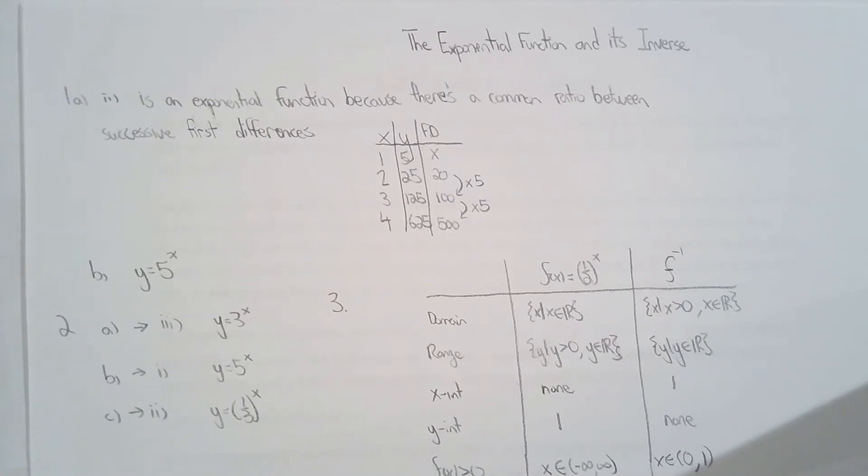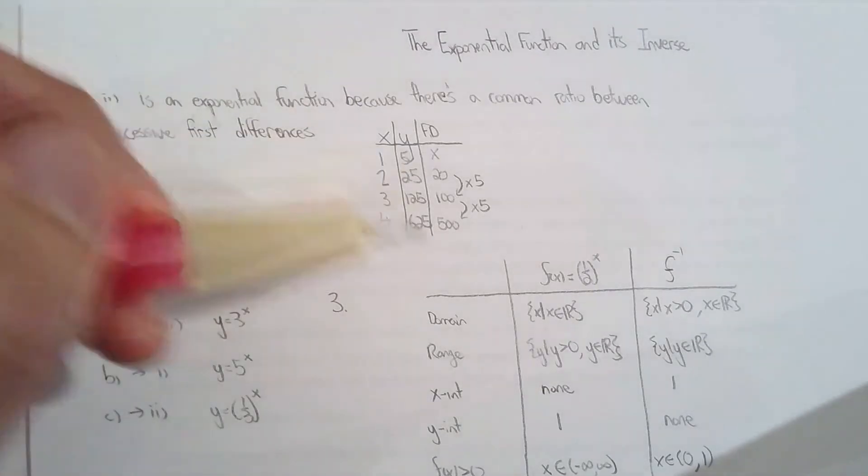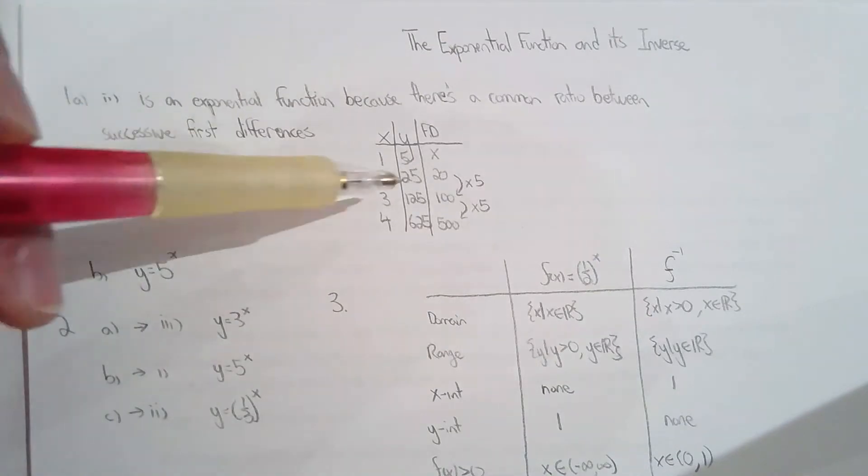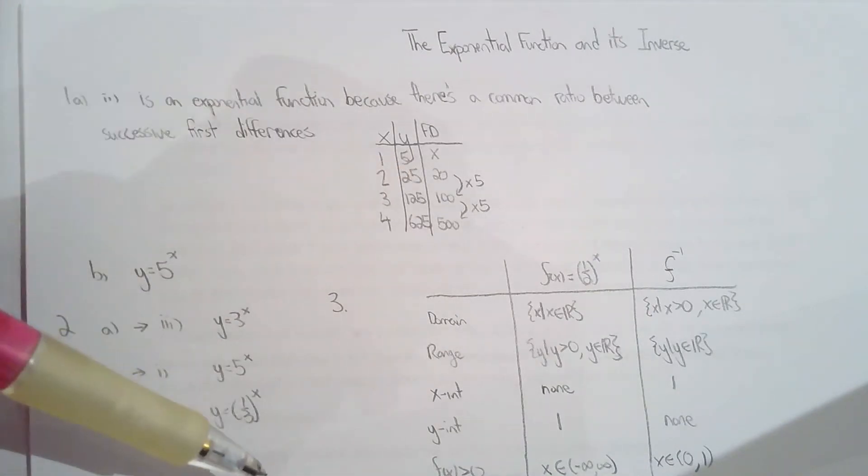The first table is not an exponential function because if you find the first differences and check if there's a common ratio, there isn't. There is no common ratio between successive first difference values. But in the second table, there is clearly a common ratio, so this represents an exponential function.